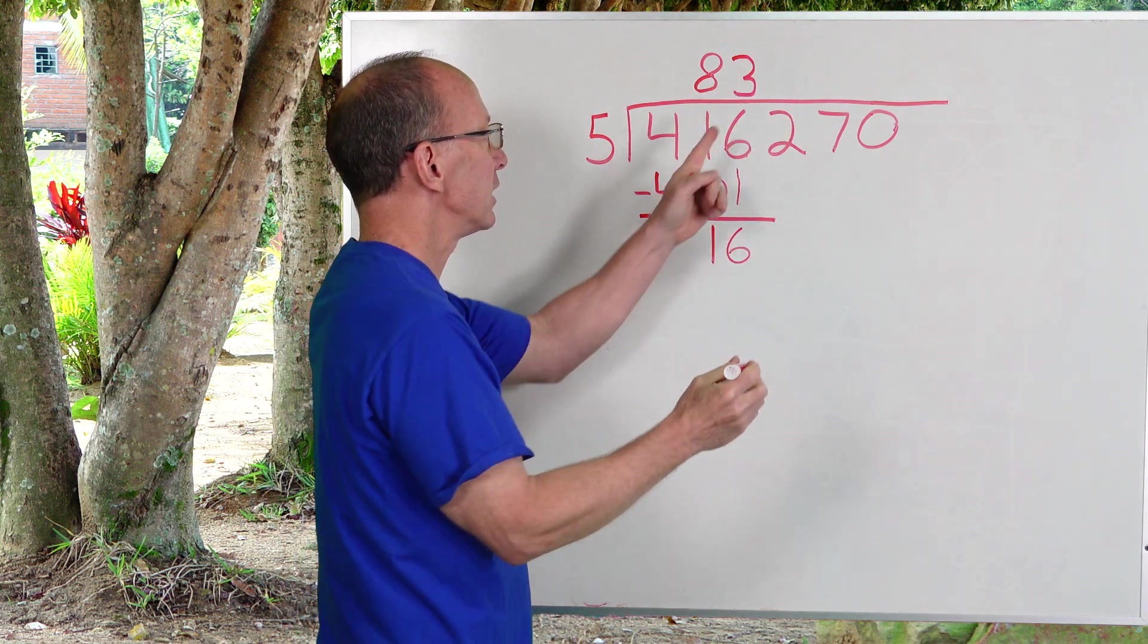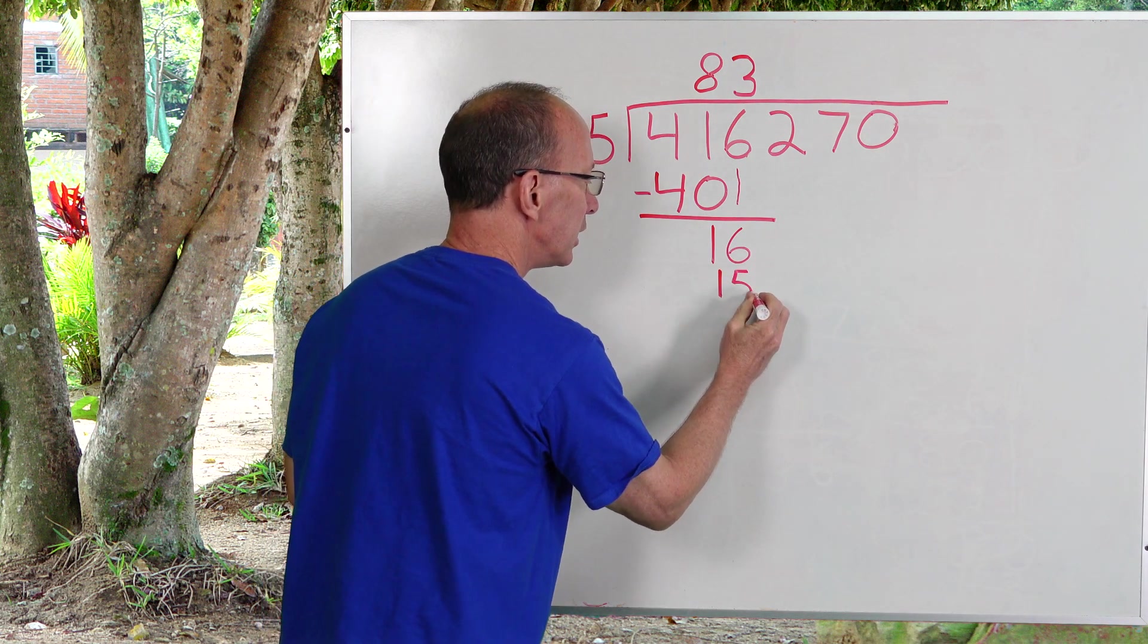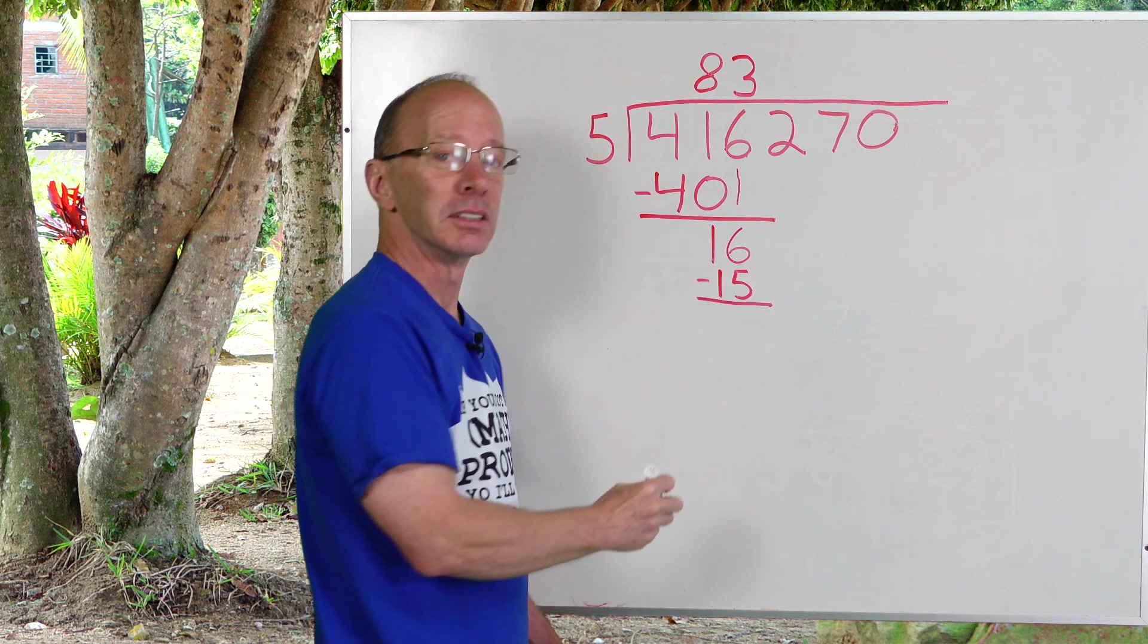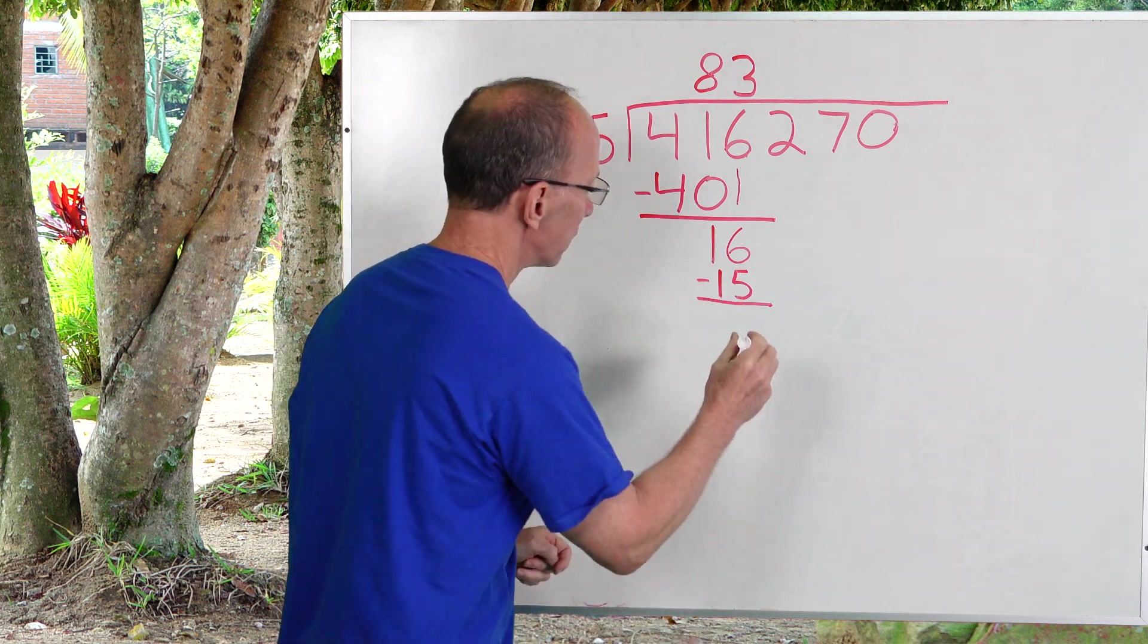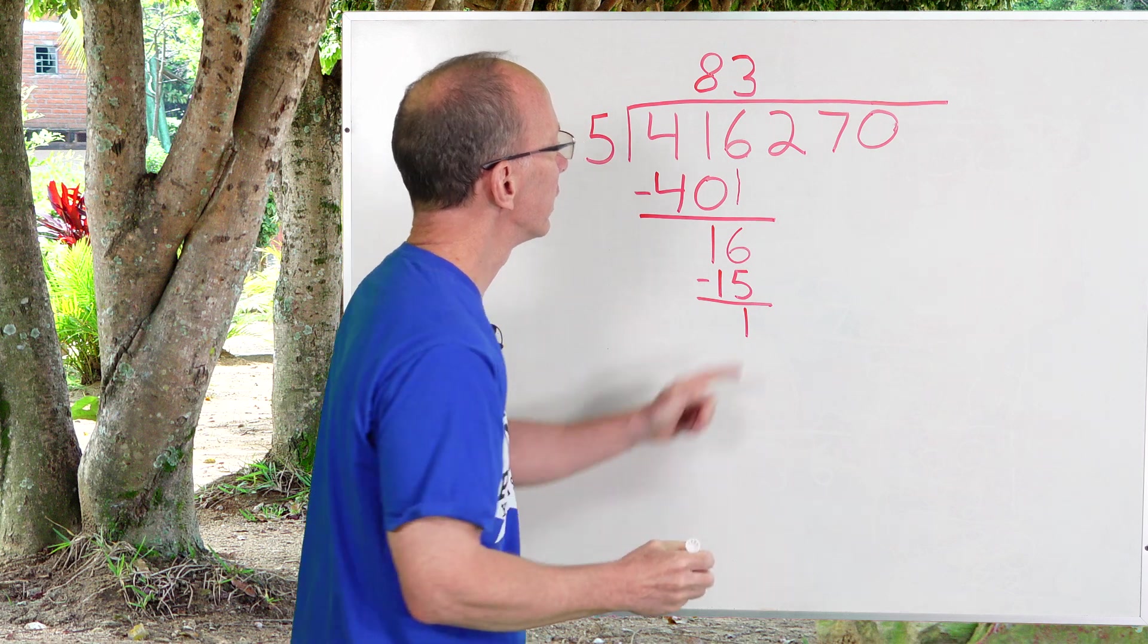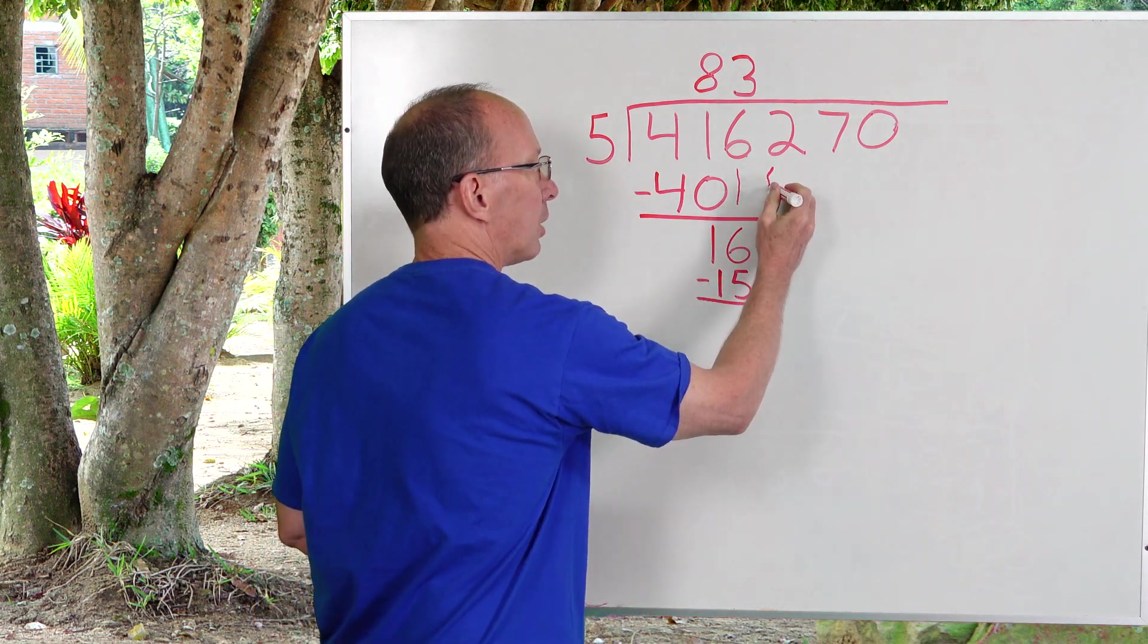Right above that six. Three times five, 15. Put 15 here. The next step, subtraction. Six minus five, uno, one. Right here, put the one right here. Drop the next number down, drop it down, drop it down.